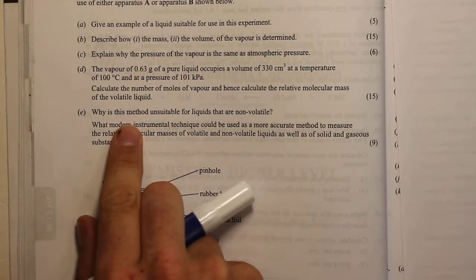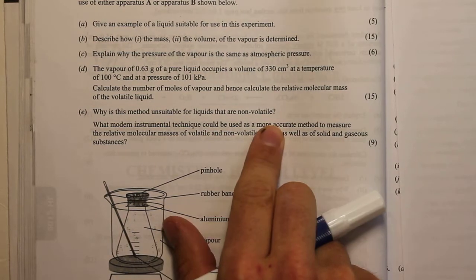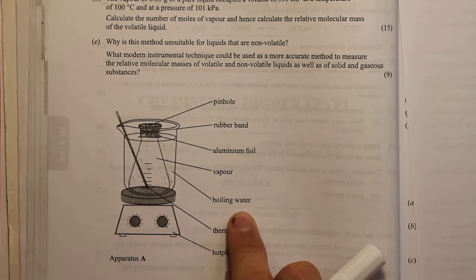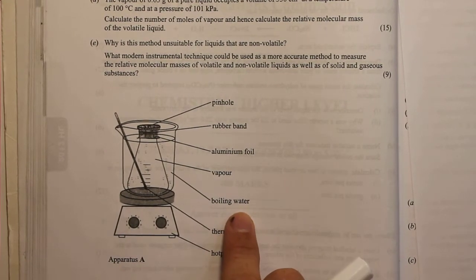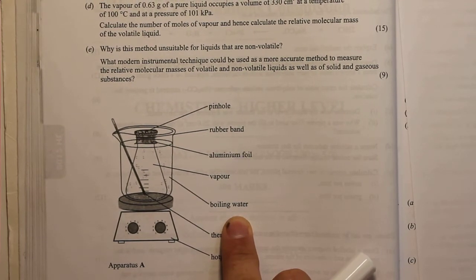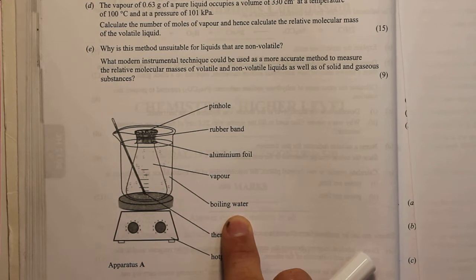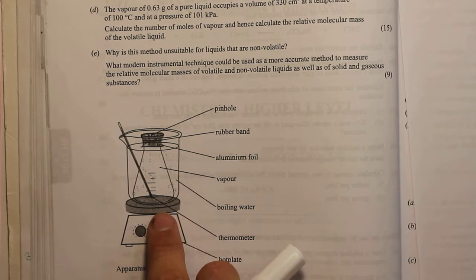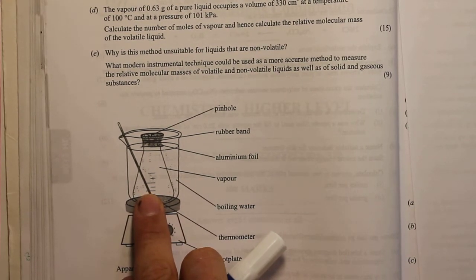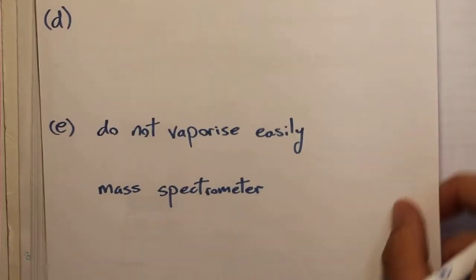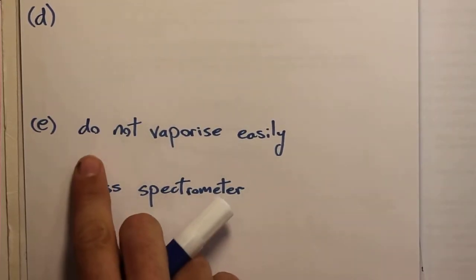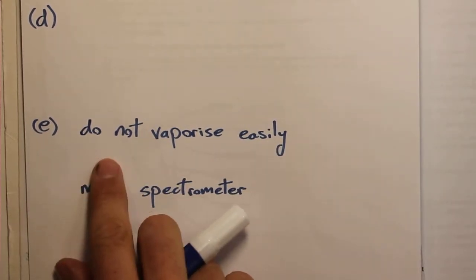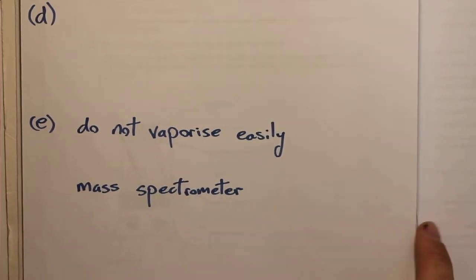For part E, we explain why this method is unsuitable for liquids that are non-volatile. We're heating water which only reaches 100 degrees Celsius. If a liquid is not volatile — not easy to vaporize — then 100 degrees Celsius would not be hot enough to completely vaporize it. The marking scheme accepts: 'they do not vaporize easily' or 'they do not have a low boiling point.'